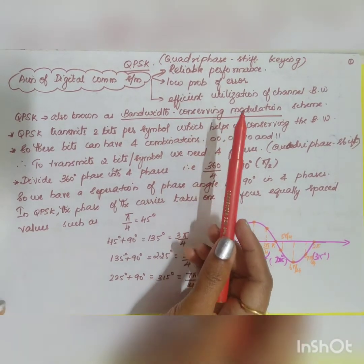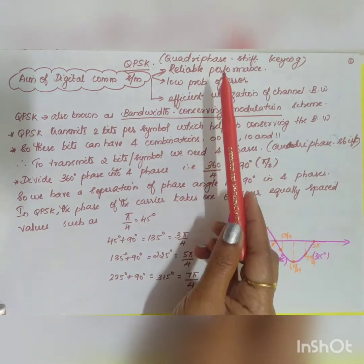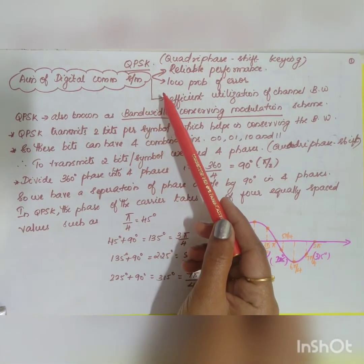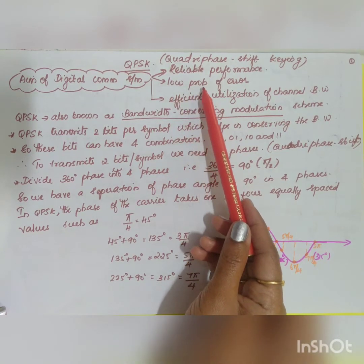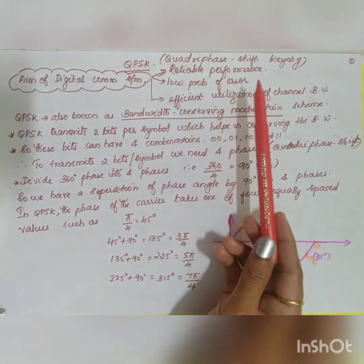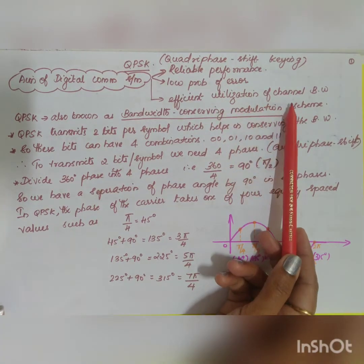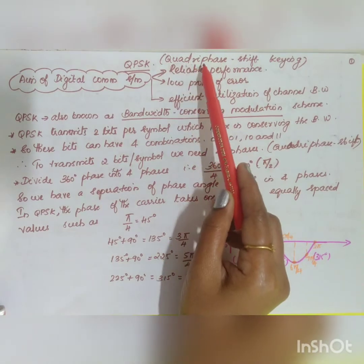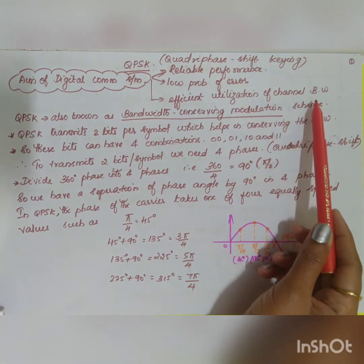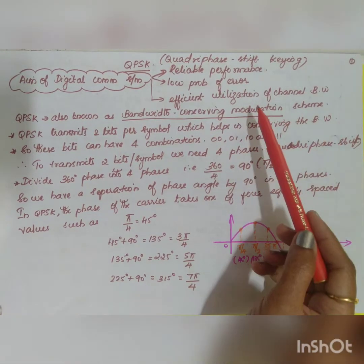The next topic in module 3 is QPSK, called quadrature phase shift keying or quadri phase shift keying. In this video we will see the signal space representation of QPSK and the transmitter and receiver side. The aim of a digital communication system is to give reliable performance with low probability of error and efficient utilization of channel bandwidth. QPSK is used to give efficient utilization of channel bandwidth, so it is also known as a bandwidth conserving modulation scheme.